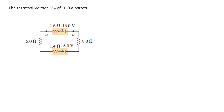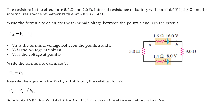Now we calculate the terminal voltage across the 16-volt battery. The terminal voltage across a battery equals the voltage of the battery minus the voltage drop across the battery due to its internal resistance. We can write V_AB equal to V_A minus V_B, where V_A is the voltage at point A and V_B is the voltage at point B.